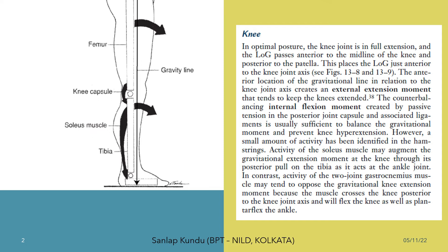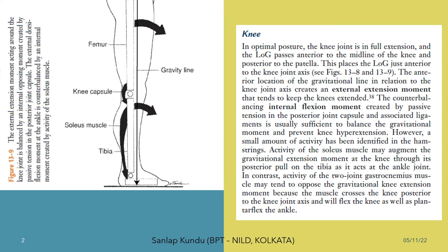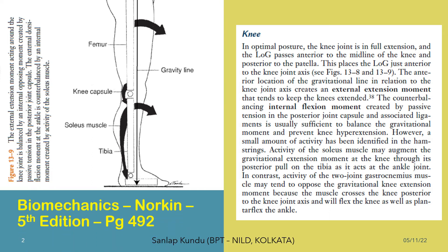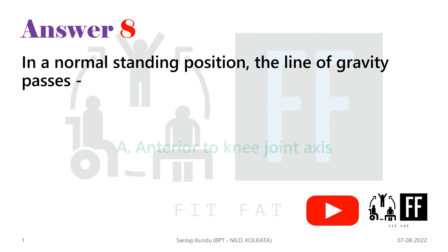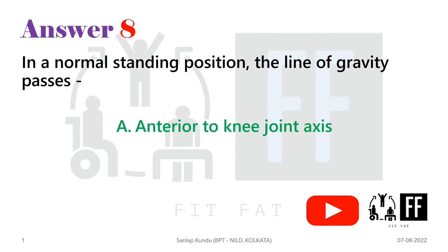In this figure, you can see this gravity line is passing anterior to the knee joint, and that creates an external extension moment that tends to keep the knees extended. Now, to prevent hyperextension, an internal flexion moment is generated to balance things. You can find all of this in Norkin's biomechanics book, page number 492. So the answer is option A — anterior to the knee joint axis.